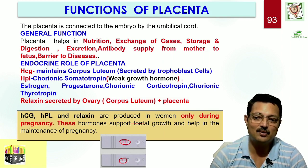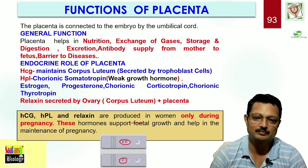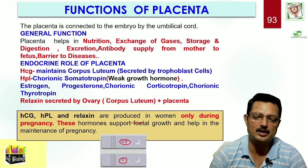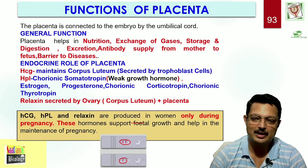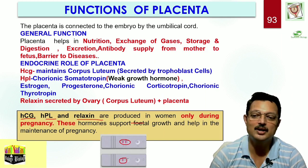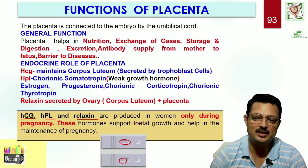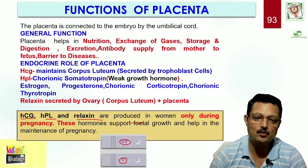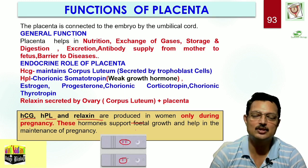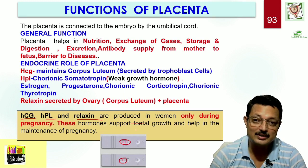At this stage, the ovary also secretes one hormone — relaxin — which is secreted by the corpus luteum and placenta together. So remember: HCG, HPL, and relaxin are the hormones secreted only during pregnancy. You should be able to differentiate these three. These hormones support fetal growth and help in the maintenance of pregnancy. That is about placenta. There are also some extra-embryonic membranes we will be discussing, and also a technique called amniocentesis.